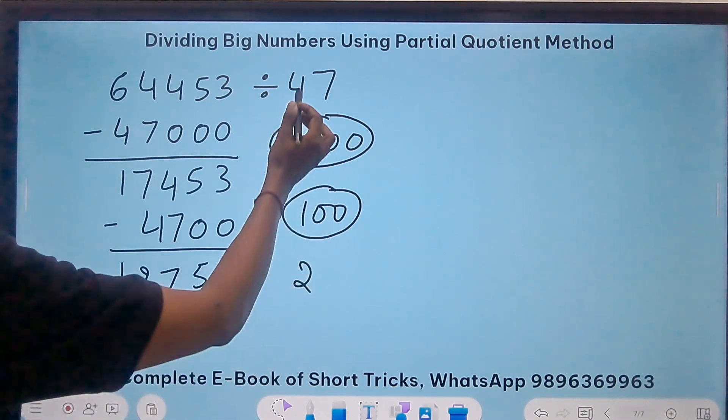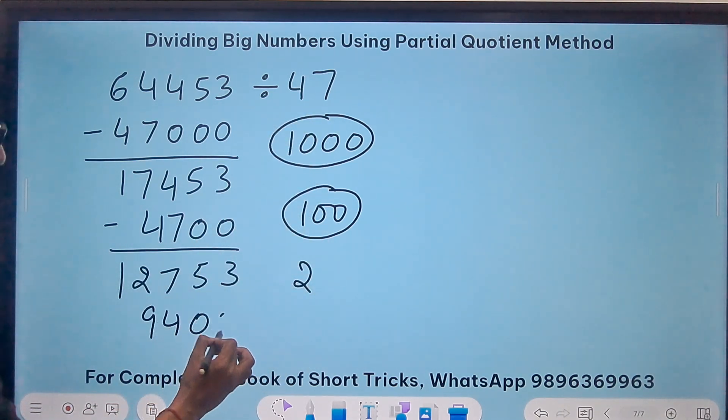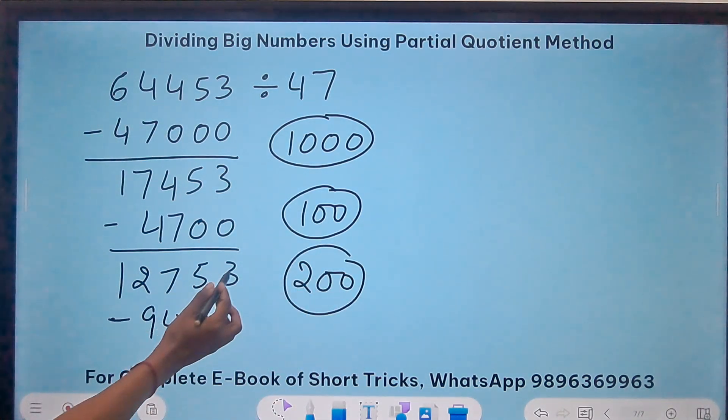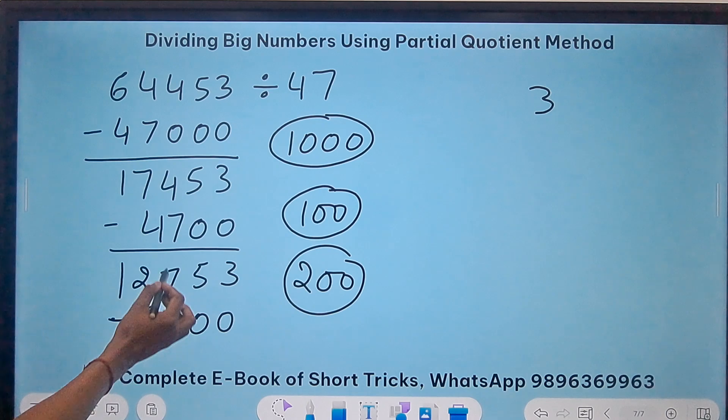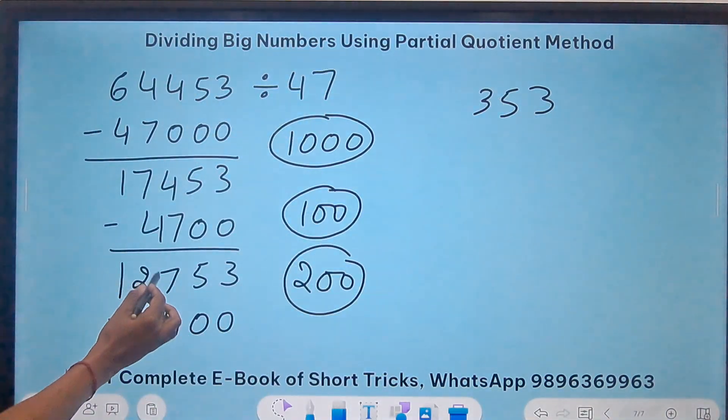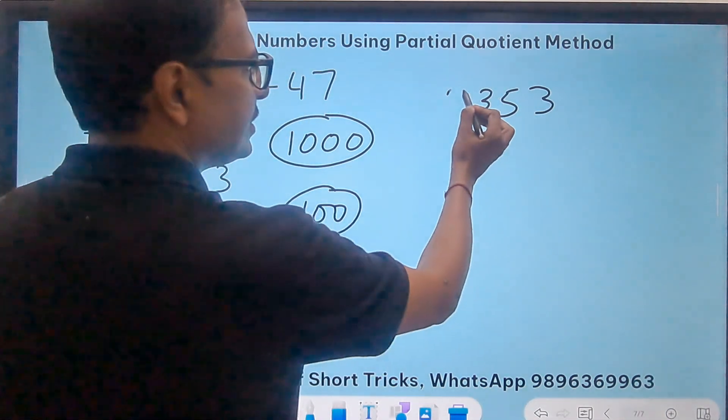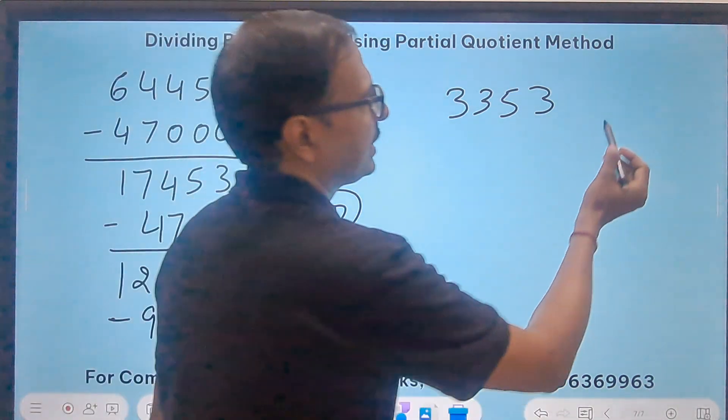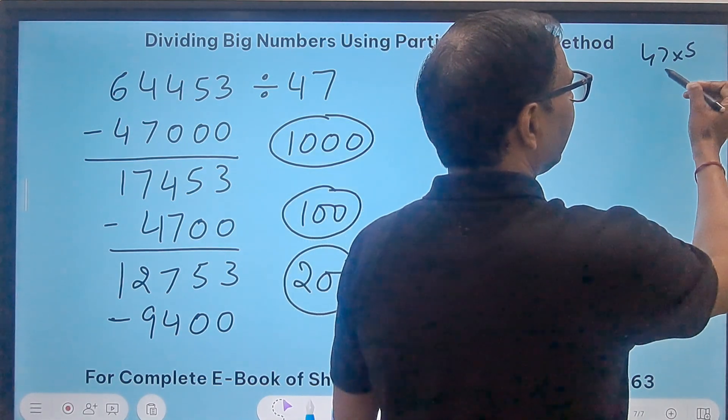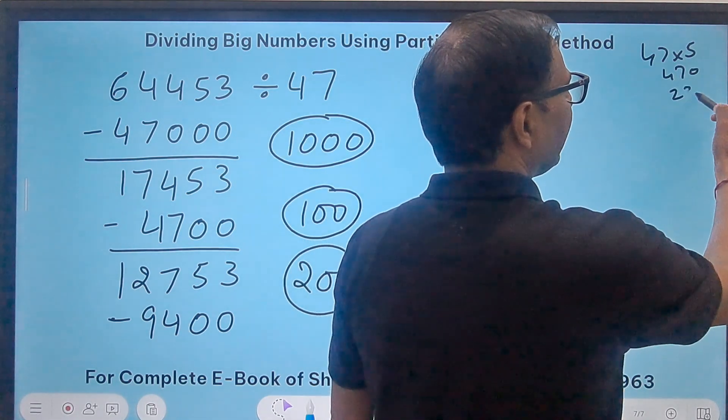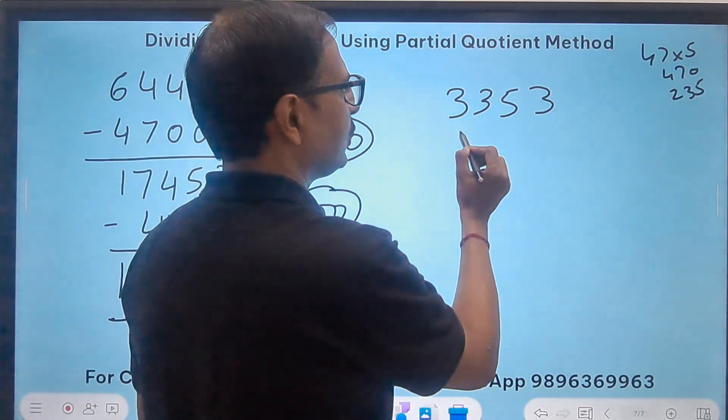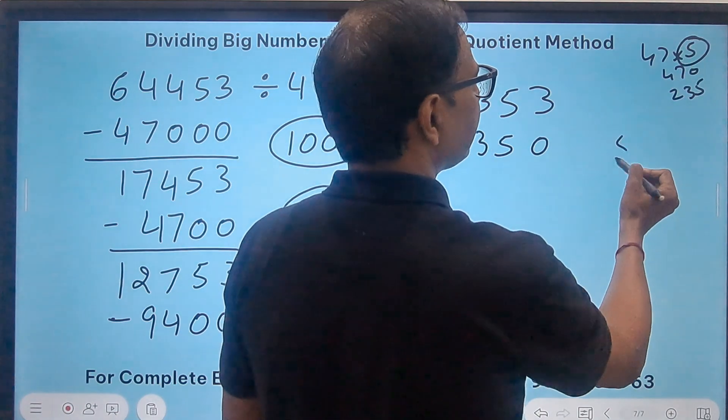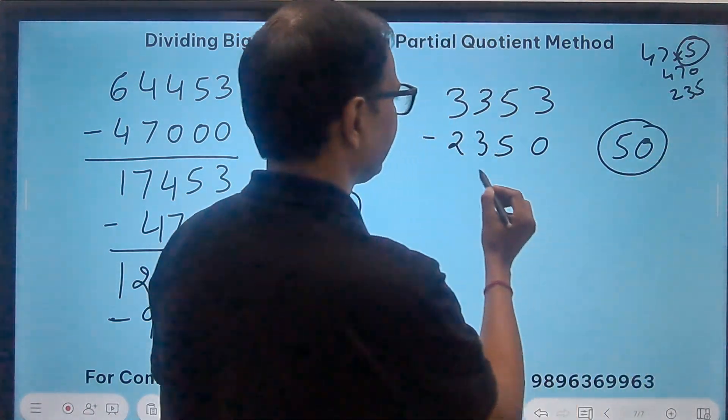47 into 2 is 94, so 200 gives 9400. When I subtract this I get 3353. 47 into 5, that's easy for me, half of 470 is 235. I want to get close to this, so 235 and a zero gives 2350. That's 50 times.